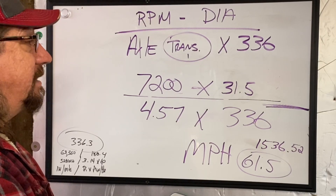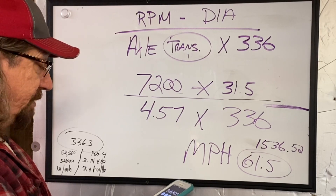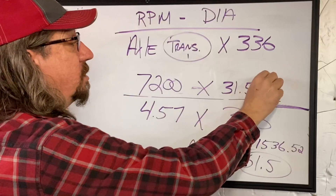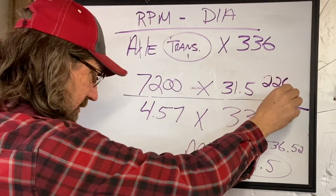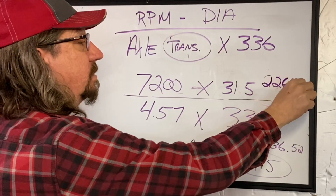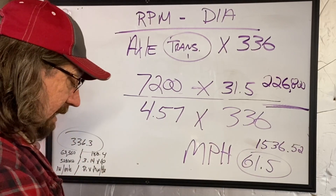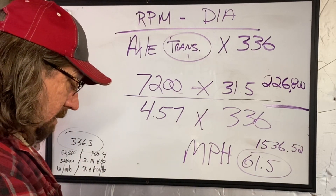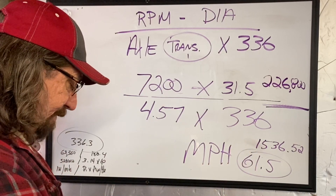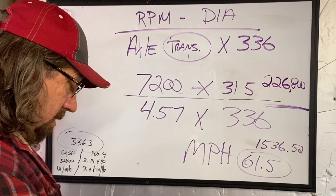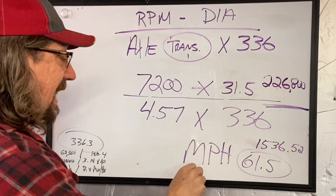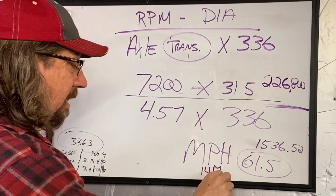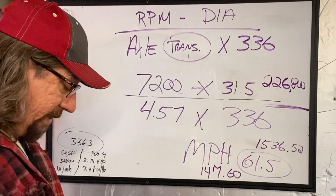That gives us about 226,800. It's roughly double what we had before — three times seven is 21, so the number should start close to 226,800. We divide 226,800 by 1,536.52. Technically, theoretically, the top miles per hour of my car is 147.60.